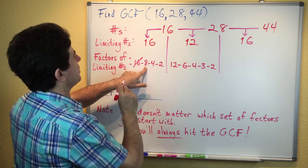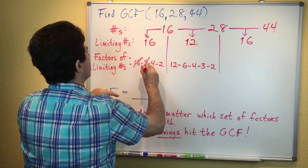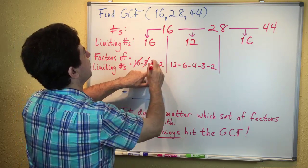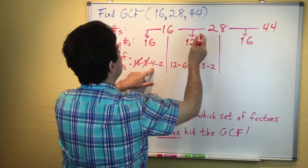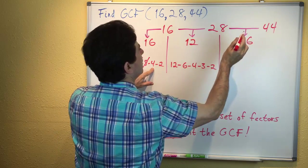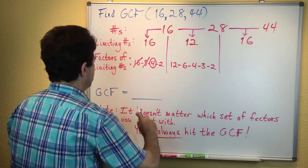Then we try 4. Does 4 go into 16? Yes. Does 4 go into 28? Yes, 7 times. Does 4 go into 44? Yes, 11 times. 4 is the GCF. We're done.